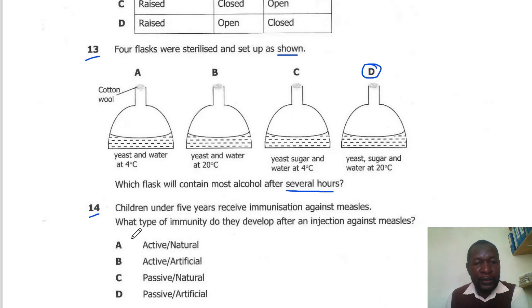Question 14. Children under 5 years old receive immunization against measles. What type of immunity do they develop after an injection against measles? They will develop an active artificial immunity. So the correct answer is B.